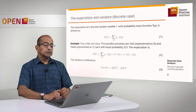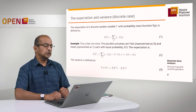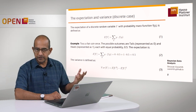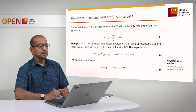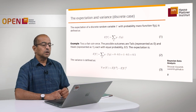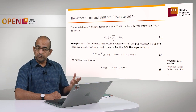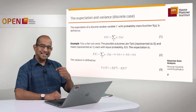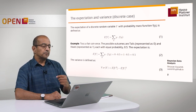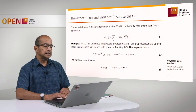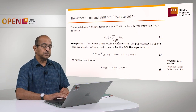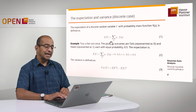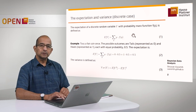In the discrete case, the definition of the expectation of a particular random variable — call it y — with some probability mass function f of y, you compute the expectation of y using this formula, which is basically multiplying every possible outcome y with its probability and summing up those values.